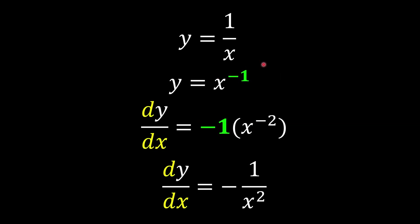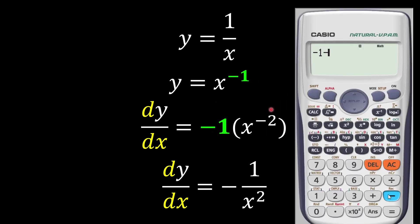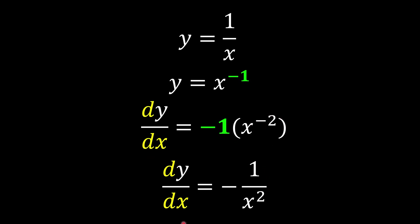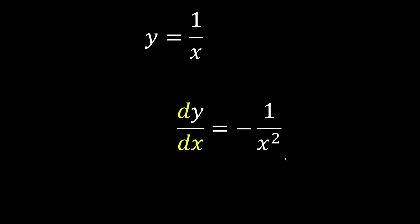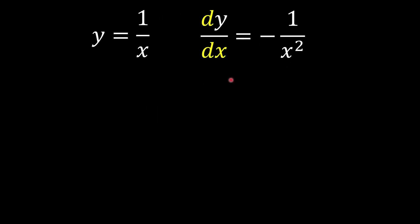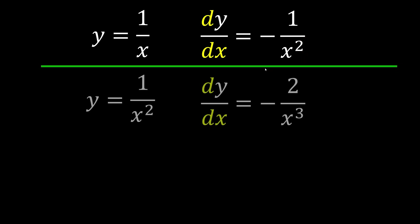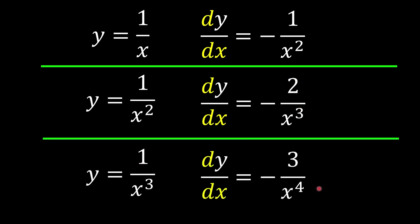So those would be my answers. Just to recap: power of negative 1, bring it in front, so it's negative 1, and negative 1 minus 1 is negative 2. Since this looks a bit ugly, I bring it back down. So this is our derivative function. Now let's see if we can find any patterns to make it easier. We know the derivative of 1 over x is negative 1 over x squared. The derivative of 1 over x squared is negative 2 over x cubed. And y equal to 1 over x cubed gives us this result. So I'm going to see what the pattern is here.